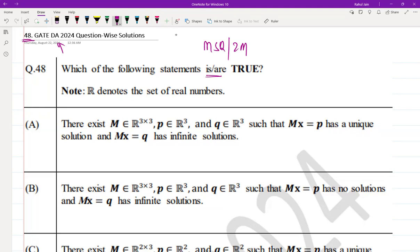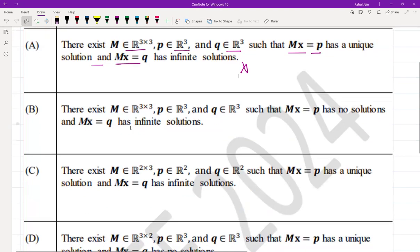Option A: There exists M ∈ ℝ^(3×3), p ∈ ℝ³, and q ∈ ℝ³ such that Mx = p has a unique solution and Mx = q has infinite solutions. This is incorrect.